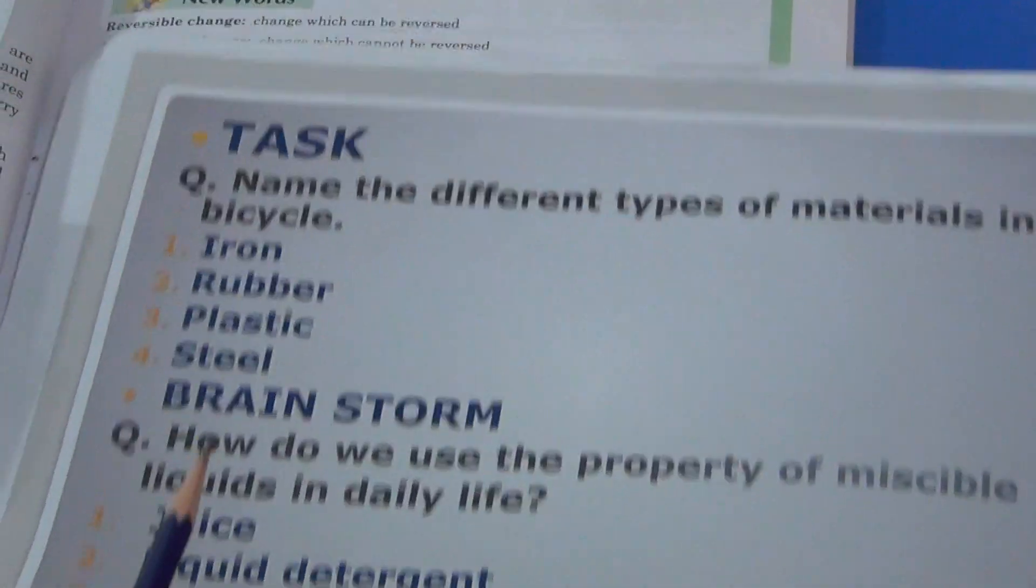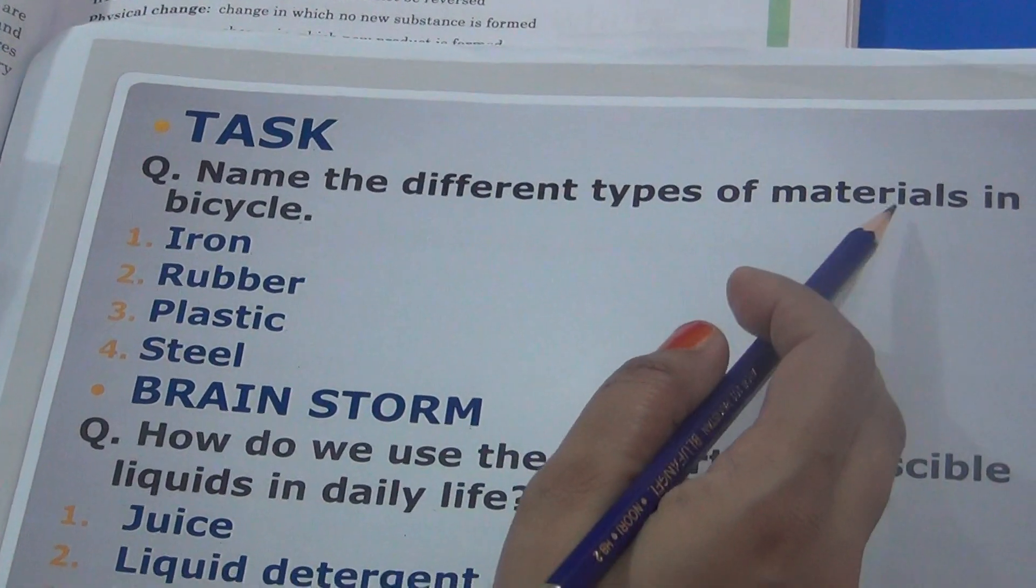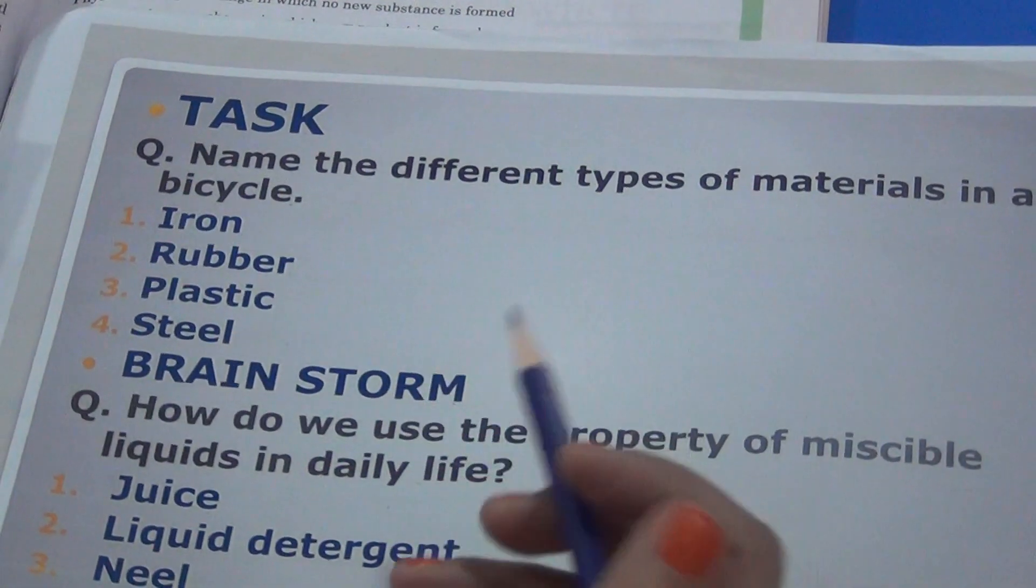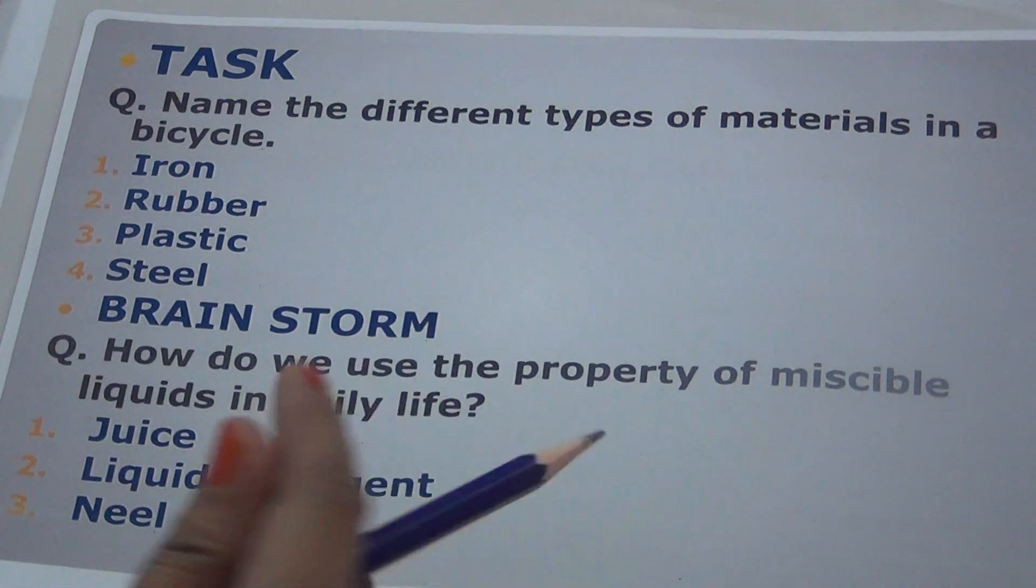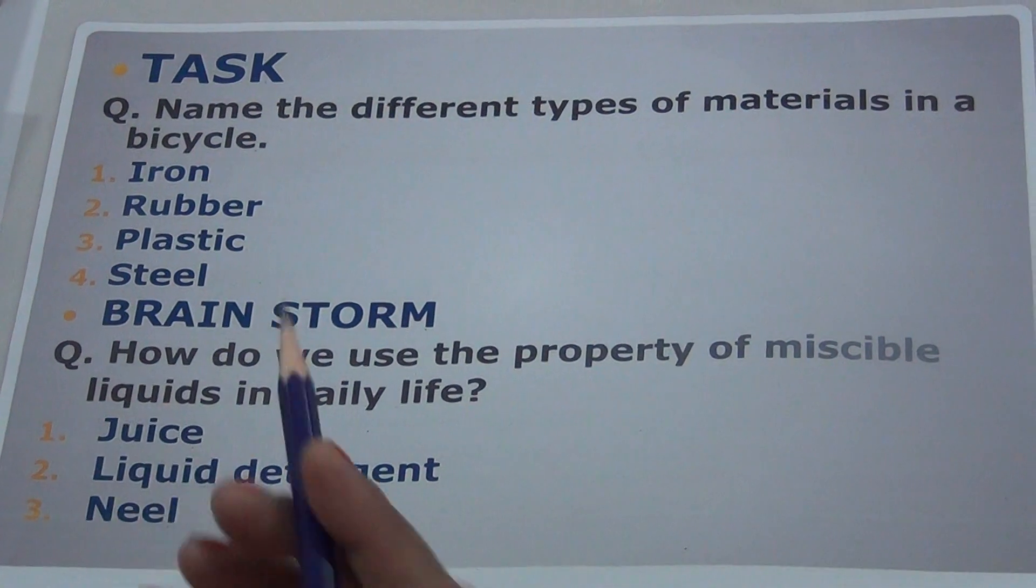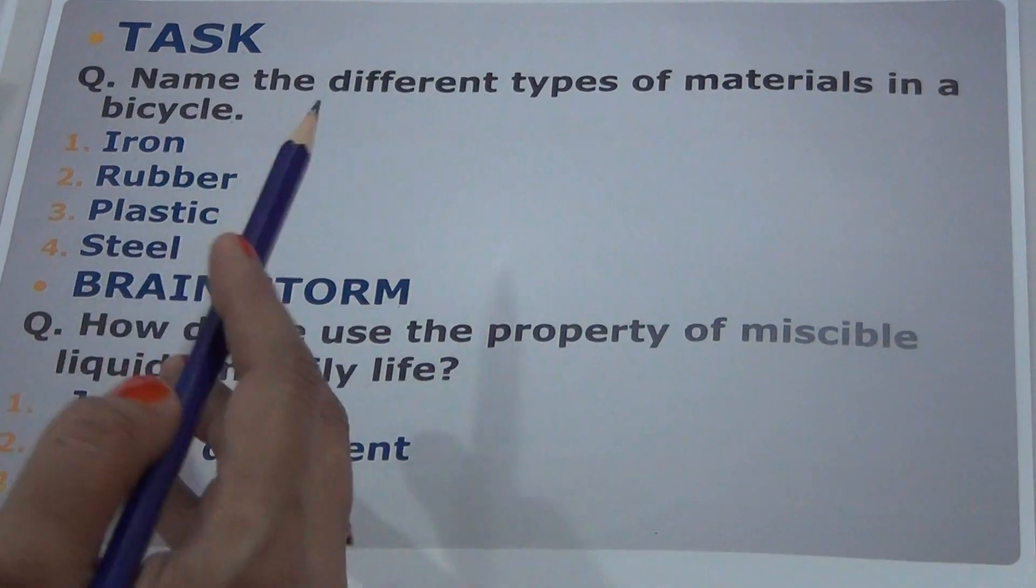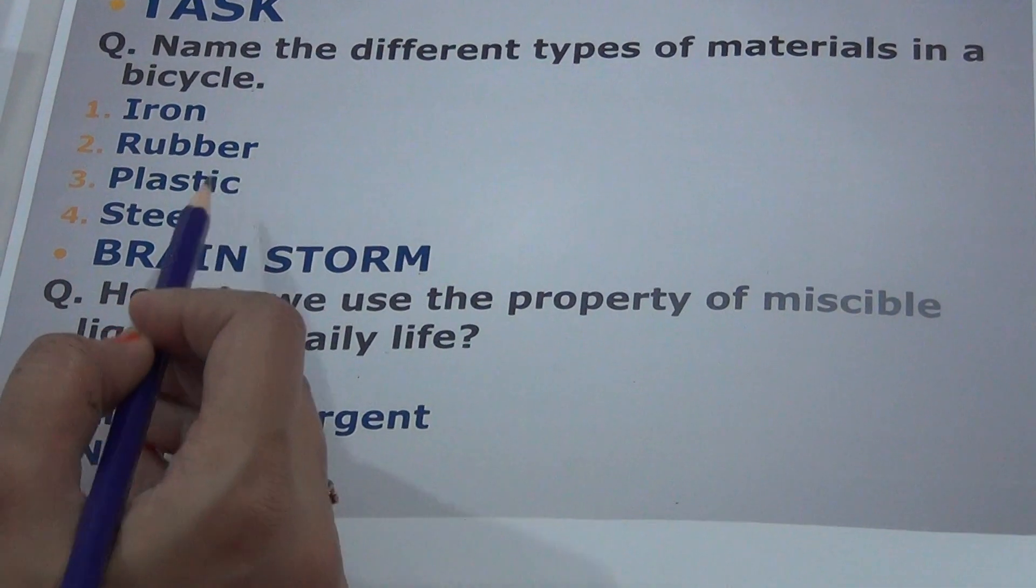Now we have tasks. Name the different types of materials in a bicycle. Many materials are used to make cycles. Iron, rubber, plastic, steel.